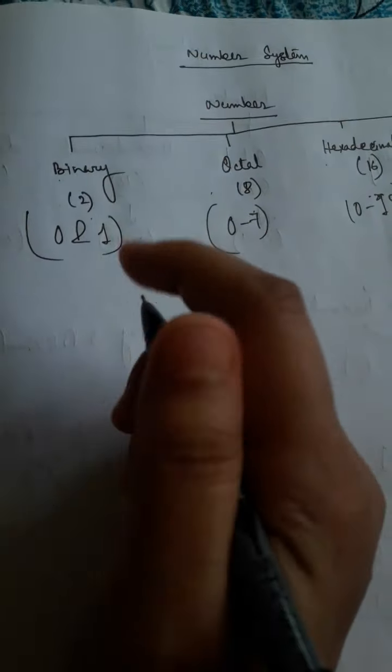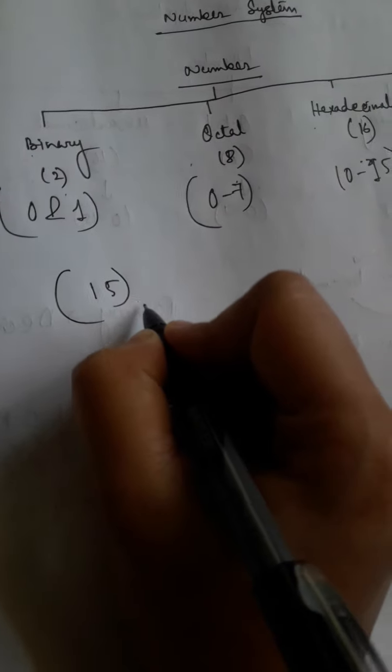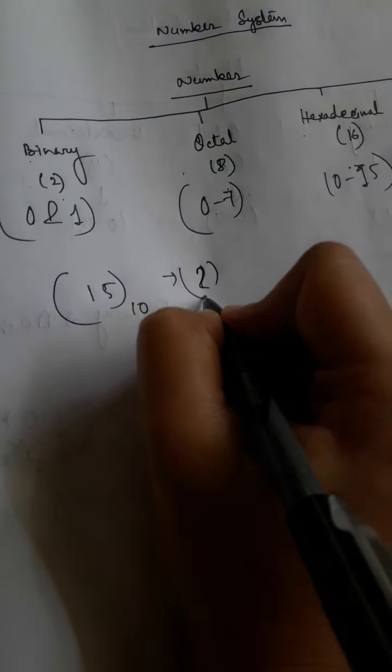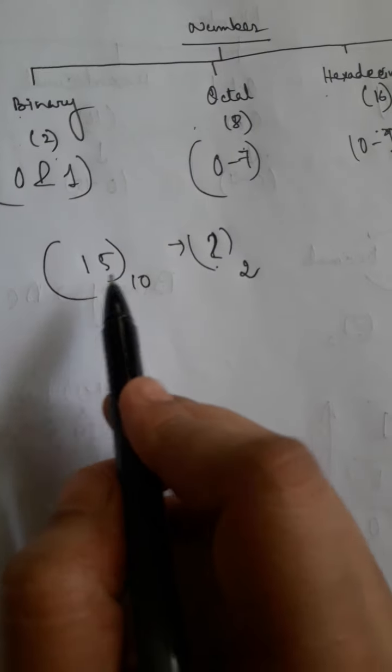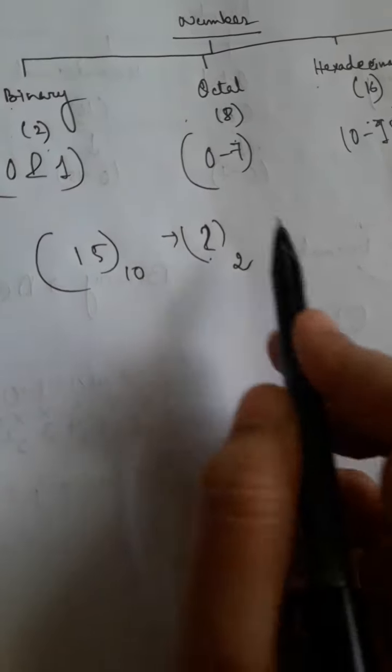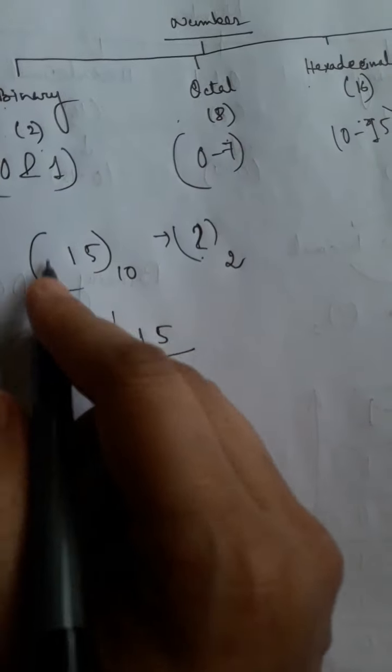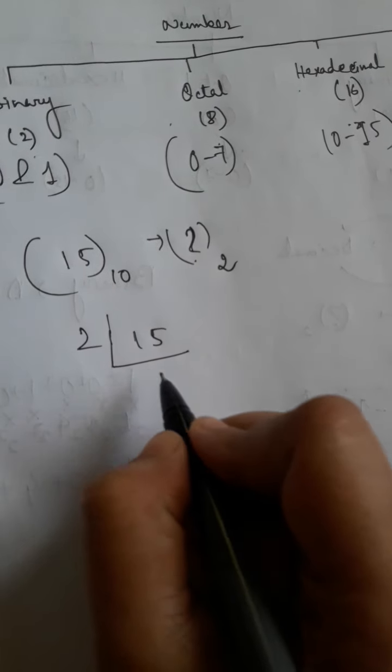How you can identify this? Based on the base value. Suppose 15 is written with base 10, and you are asked to convert it to base 2. That means you have to convert a decimal number to binary. How will you convert it? Just divide the number by 2. If we divide 15 by 2, the quotient is 7 and we write the remainder on this side.